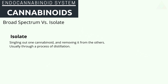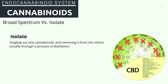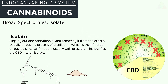Isolate is singling out one cannabinoid, like CBD, then removing all of the other cannabinoids to just make it pure CBD. Usually this is done through a process of distillation or fractional distillation, which is then run through a silica filter to be purified.